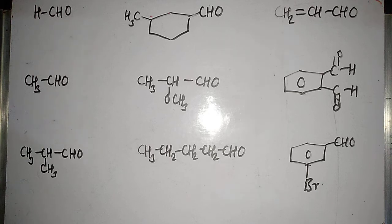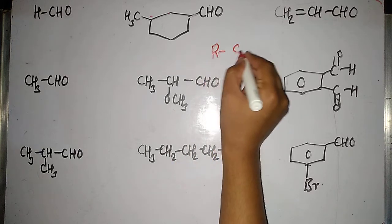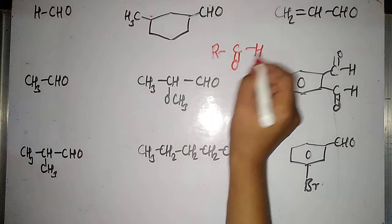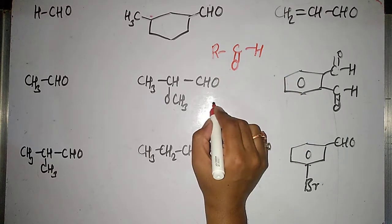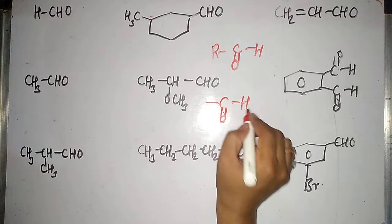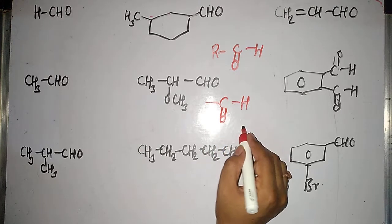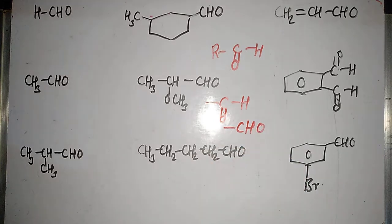Hello students. Today we'll see the nomenclature of aldehydes. So what are aldehydes? Aldehydes are organic compounds which are represented by R-C double bond O-H, and they contain a dash C double bond O-H as a functional group, or sometimes it is also written as dash CHO. So these compounds are called aldehydes.